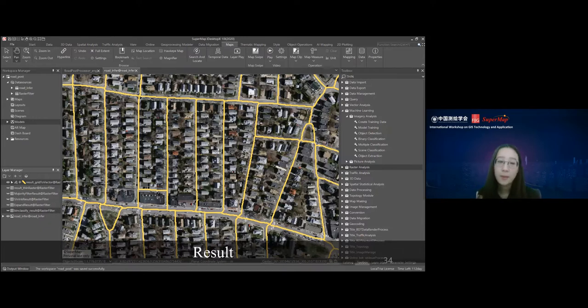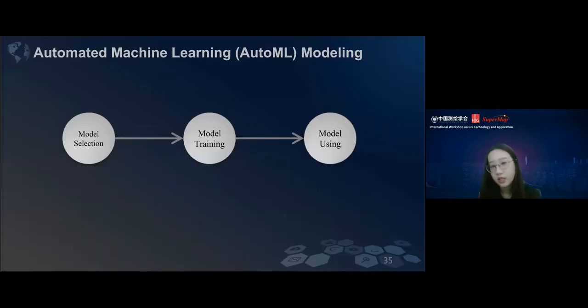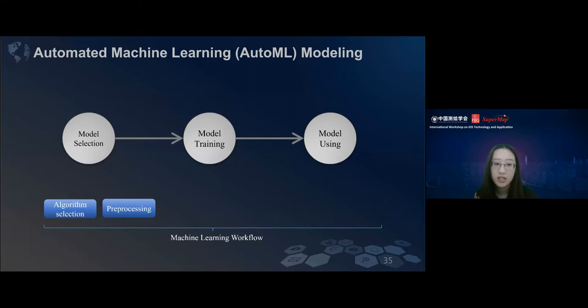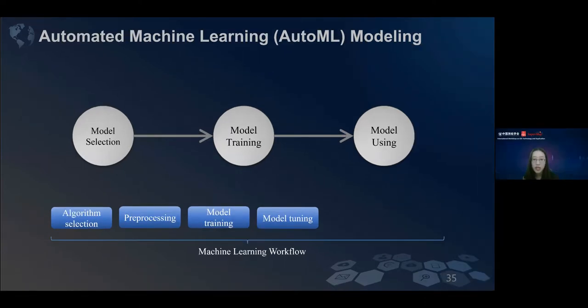After we talk about deep learning workflows, how about the machine learning workflow? Is it the same method? The answer is yes. We can also decompose the whole workflow into three: model selection, model training, and model using. To be detailed, model selection can be split into algorithm selection and preprocessing. Model training includes the model training and model tuning. And the last one can be split into explanation and model evaluation. It's a lot of work to do.